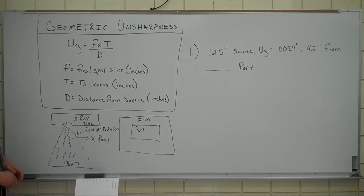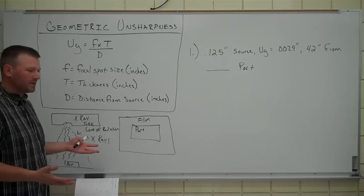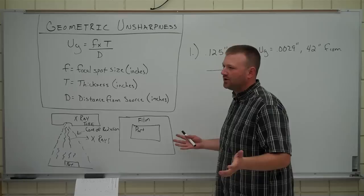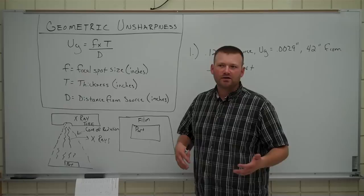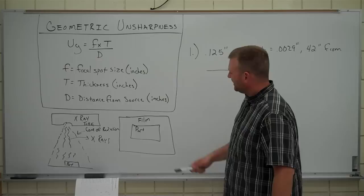First little set of calculations here, geometric unsharpness. Kind of the way to get this all started, really what you have to realize is, we're taking these x-rays, as you read in RT1, you're taking all these x-rays, and you know you got to read them, but you got to have something to read, and you know that nothing's perfect. You take a picture with a digital camera, it comes out fuzzy. You take a picture with a gamma ray camera, or an x-ray tube, it's going to come out fuzzy as well.